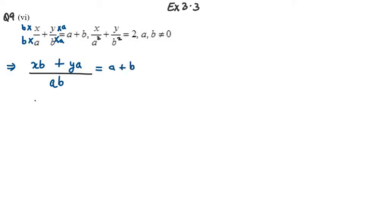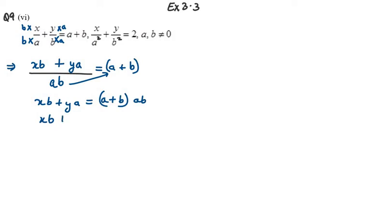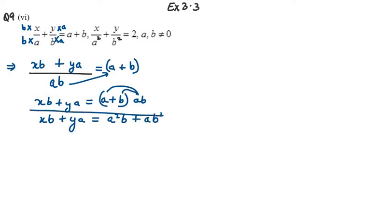Solving further, XB plus YA equals A plus B multiplied by AB. So the equation becomes XB plus YA equals A²B plus AB². This is equation number one.